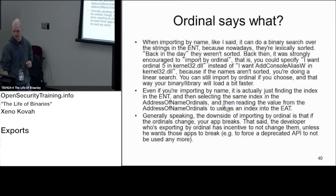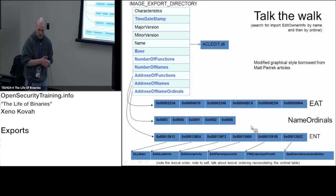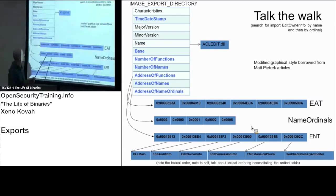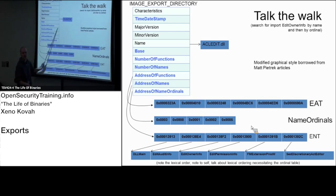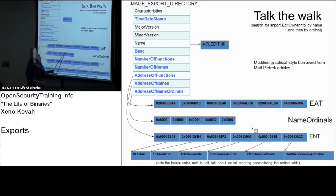And then finally there's the name ordinals table. This has to do with the alphabetical, lexical ordering of those strings. The export names table allows us to map from the strings table into a potentially different index in the export address table. So we've got the EAT pointed to by address of functions, the ENT pointed to by address of names, and then this name ordinals table which is a translation table between the export names table and the export address table.